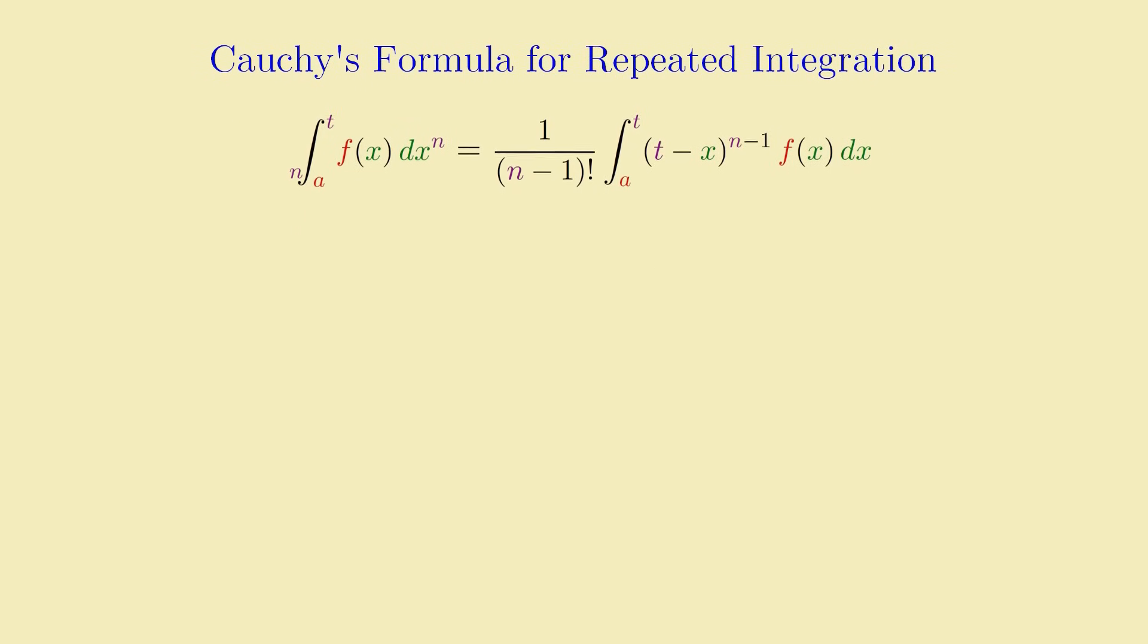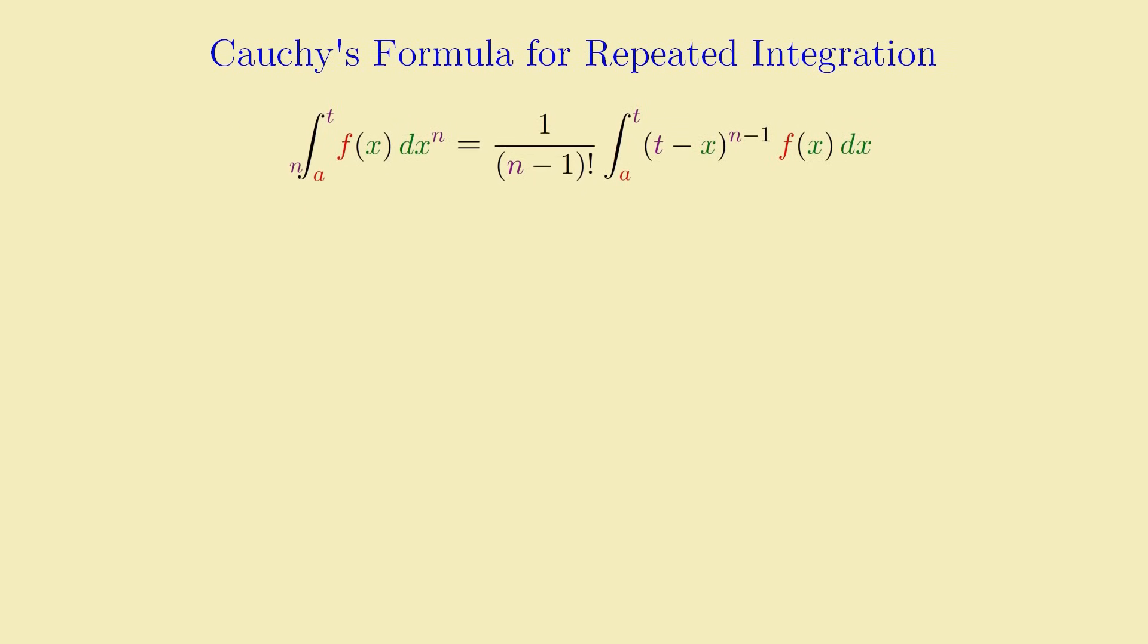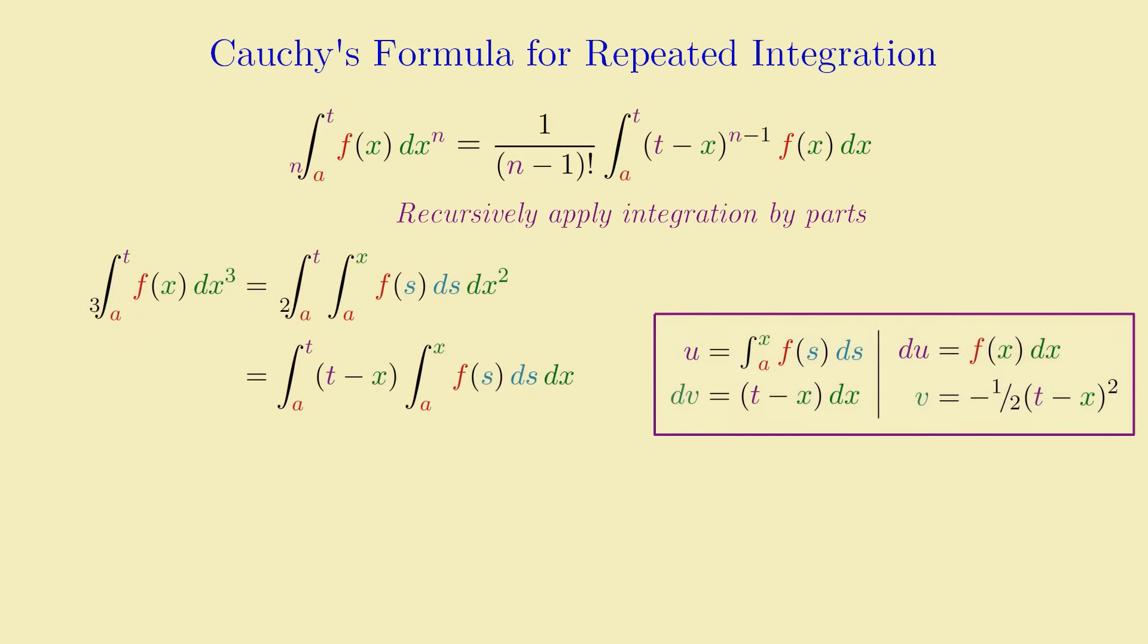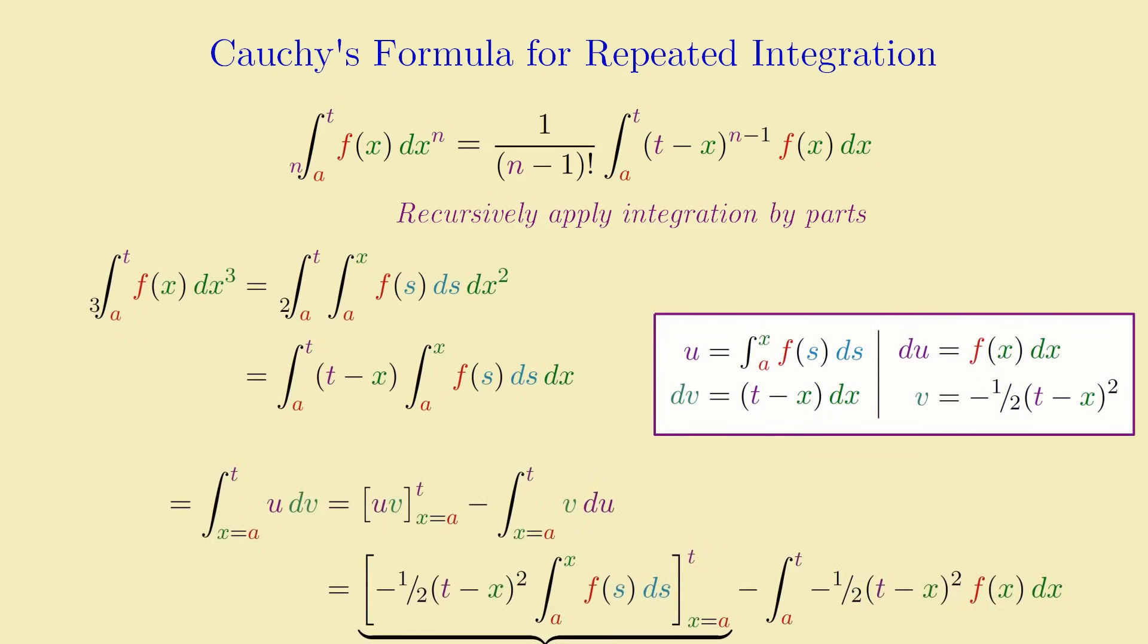Now, I don't have a nice visual derivation for this more general version of the formula, but from an algebraic point of view, it basically just comes down to recursively applying integration by parts to generate compressions of higher order repeated integrals. To give the basic idea, I'll flash the derivation of the n equals 3 case on screen for a moment, so those of you who want can pause and read it.